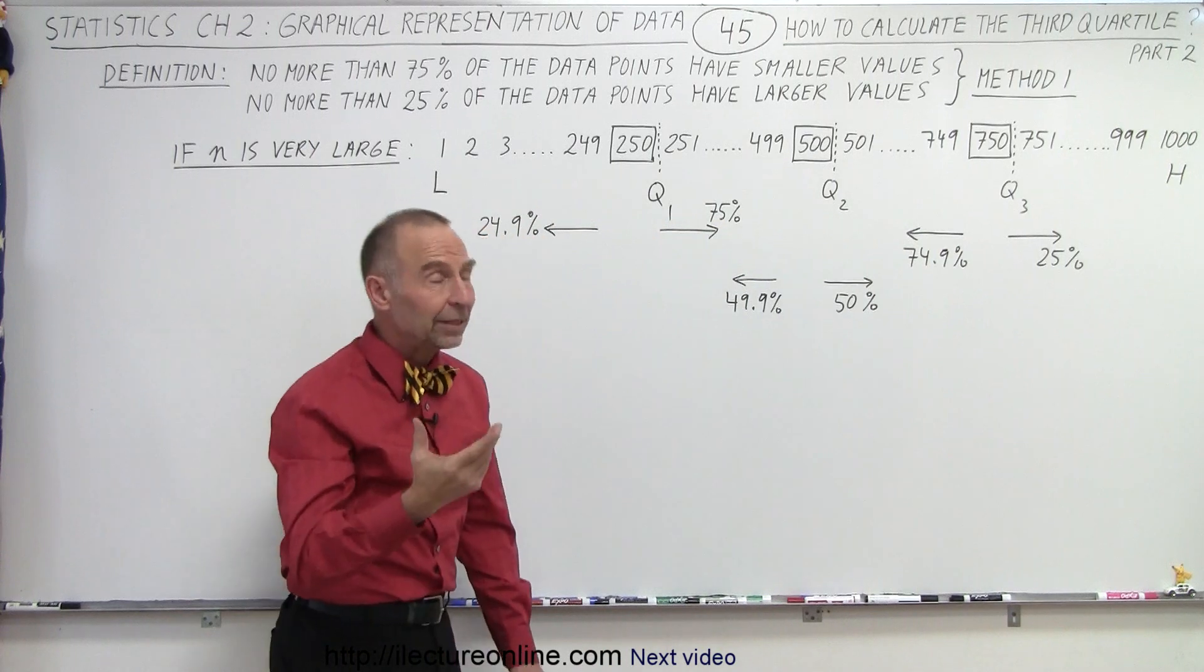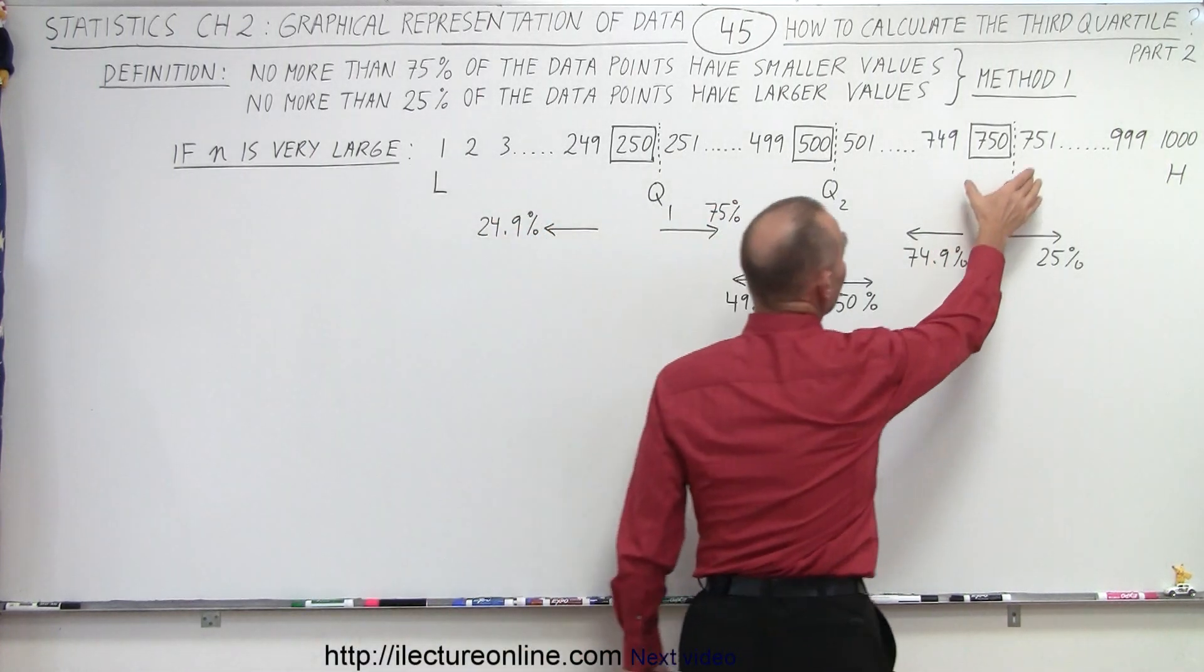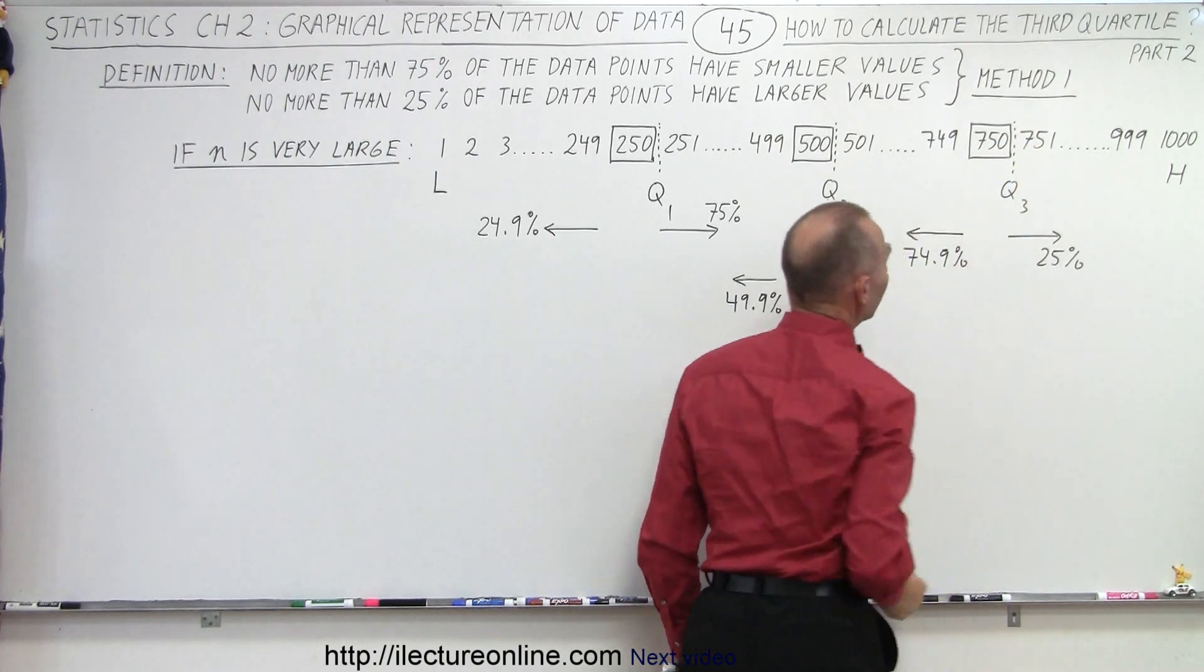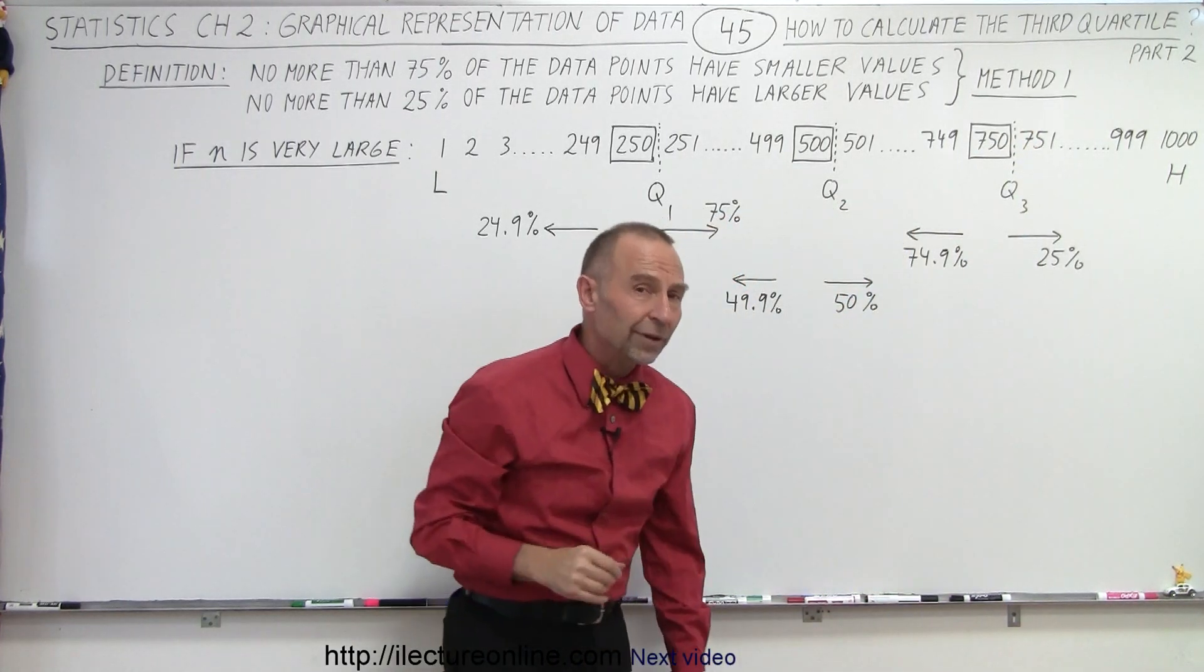Notice that typically we could, for example, take the average value between the two points on either side of this and call that the data value for the third quartile.